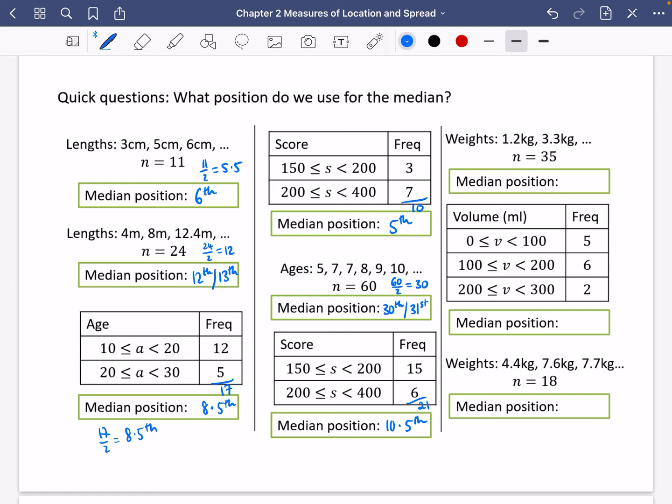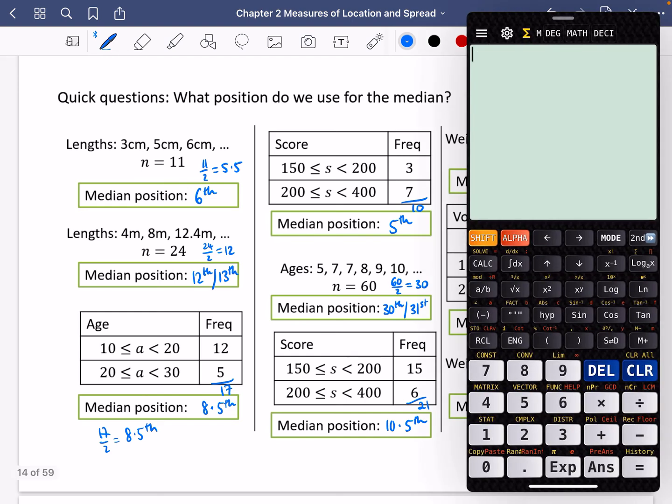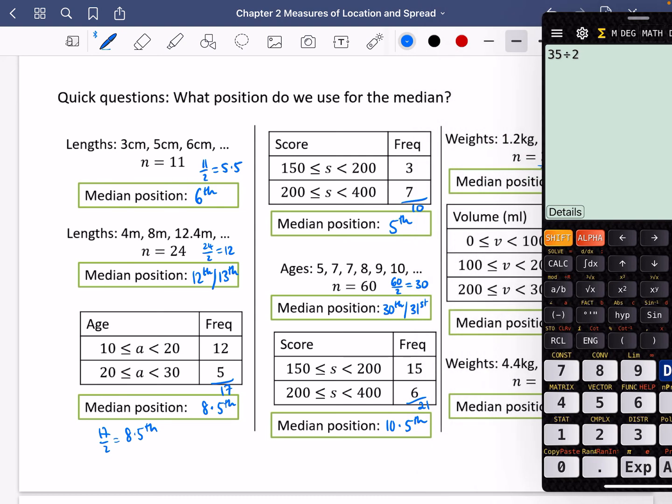There are 35 in this one. So I'm going to do half of 35. I'm going to be super lazy. Half of 35 is 17.5.